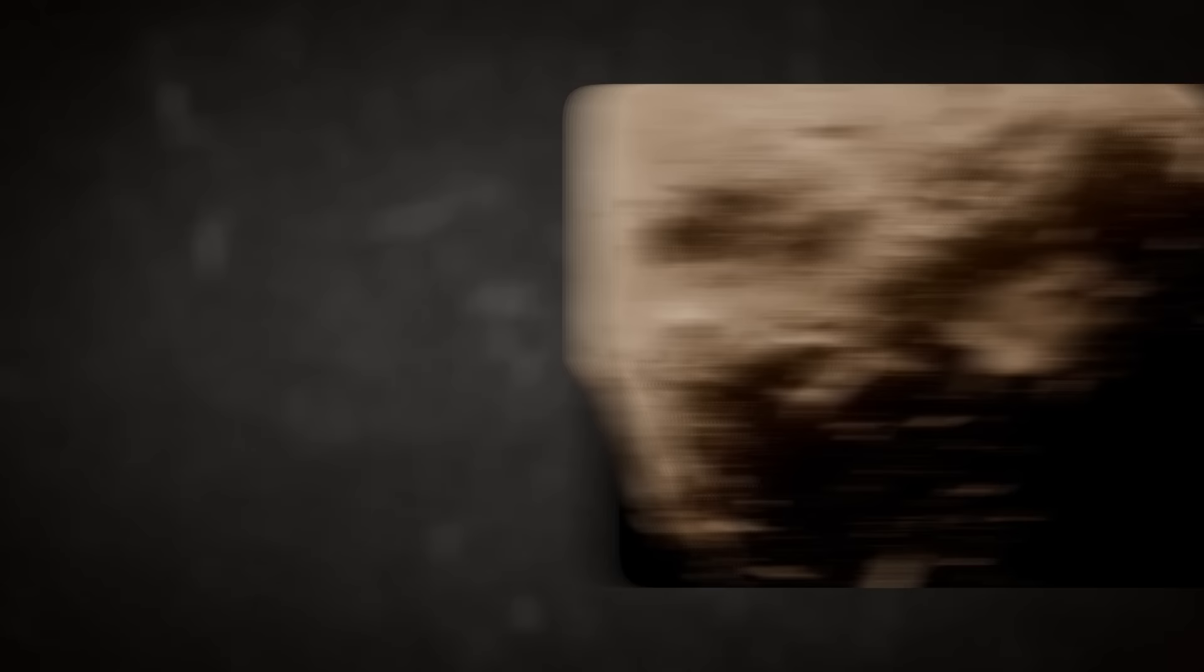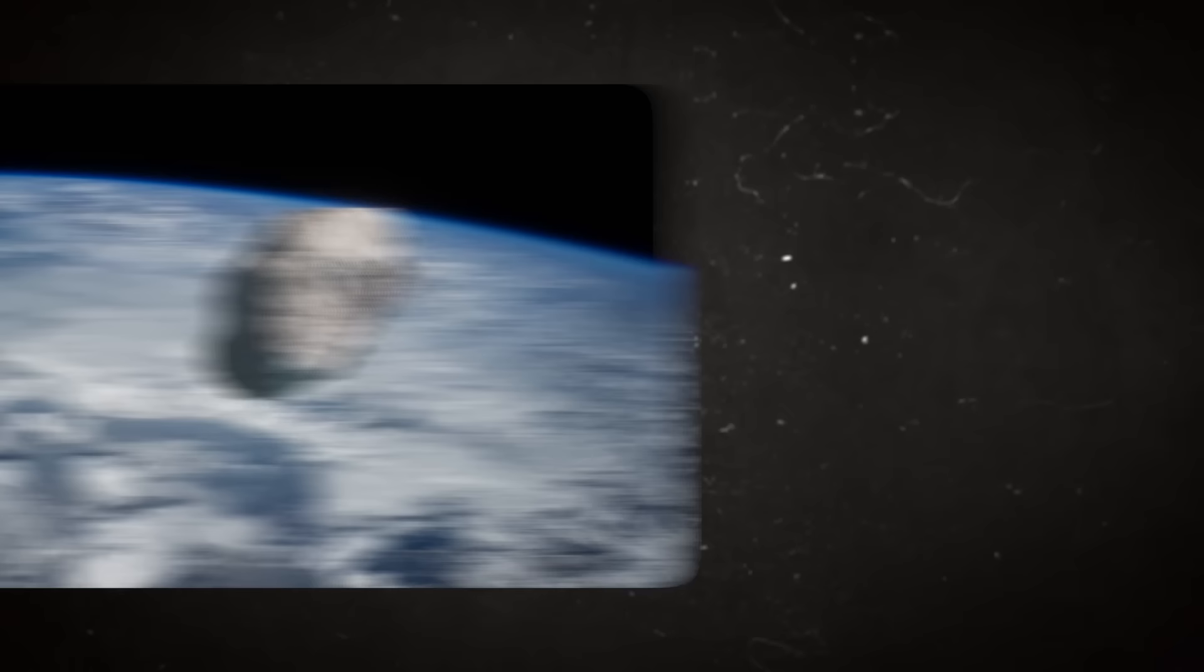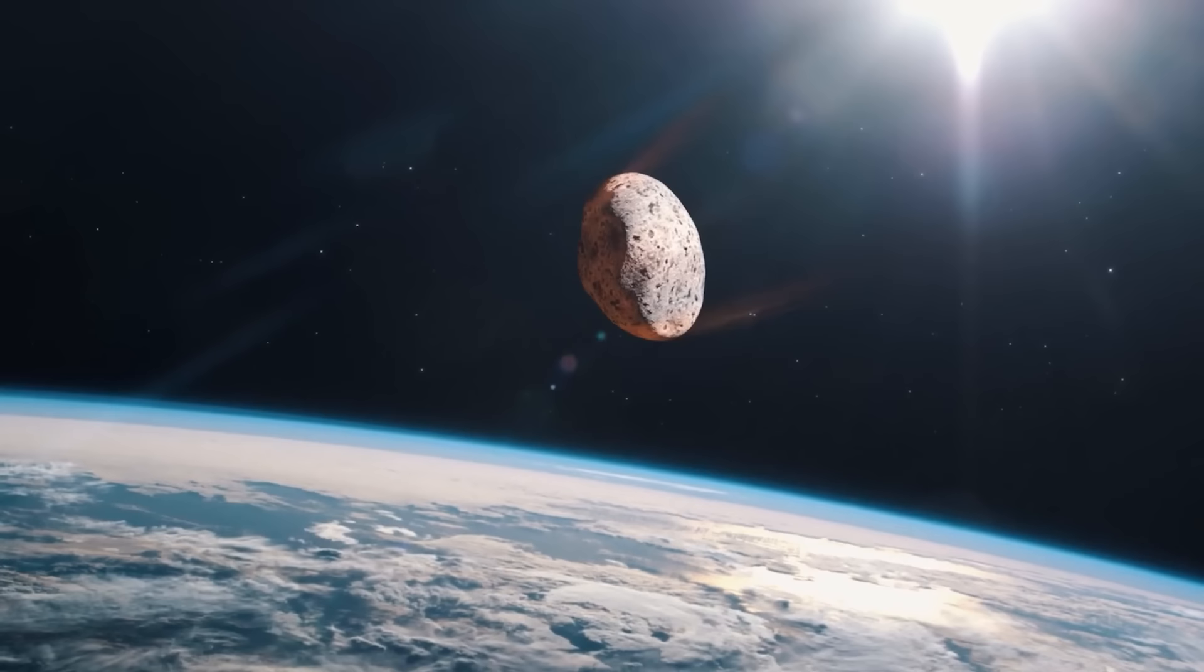As such, NASA and other interested scientists believe that understanding the composition of Bennu and asteroids more broadly could help them deflect them, should that be needed in the future. One way to do this would be to redirect the asteroid directly using what is called the kinetic impactor technique, as demonstrated by NASA's DART mission.